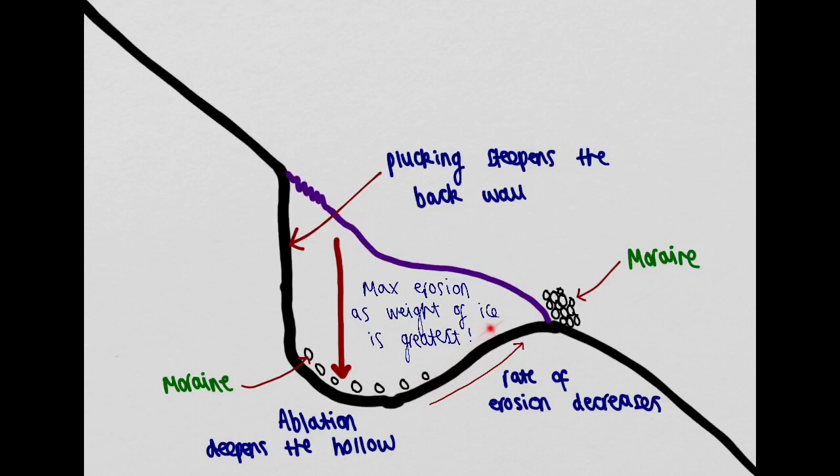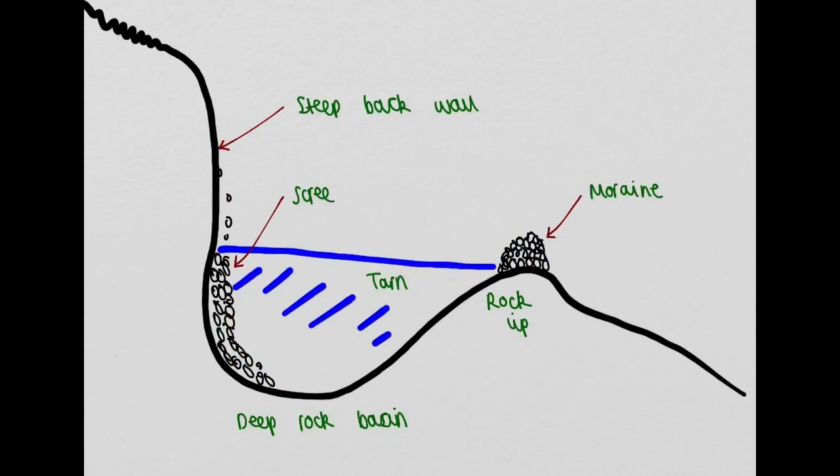At the front edge of the corrie, the ice thins out as it speeds up on its journey down valley, and this area is therefore less eroded, encouraging the formation of a rock lip.